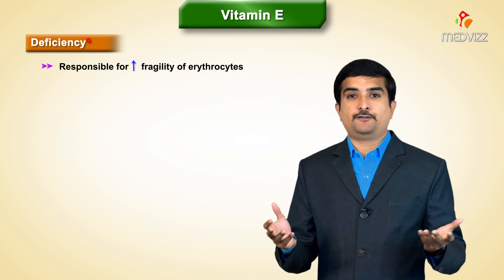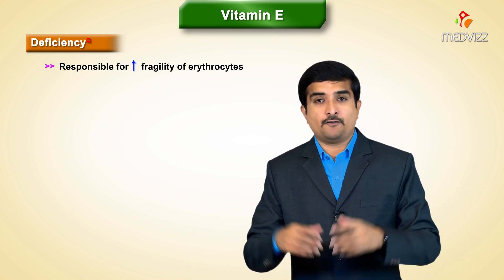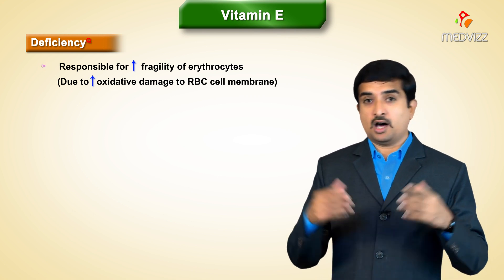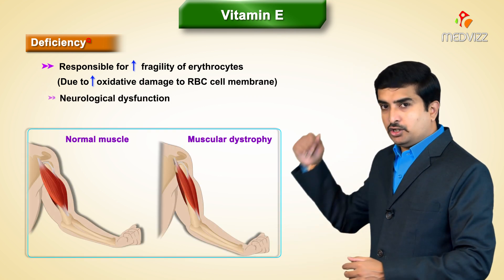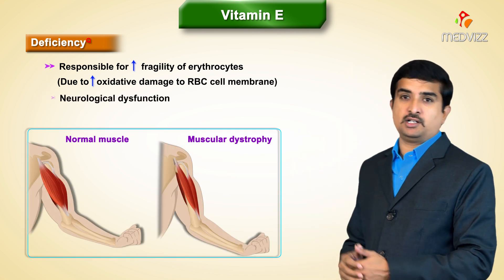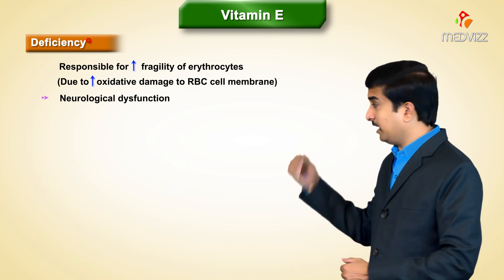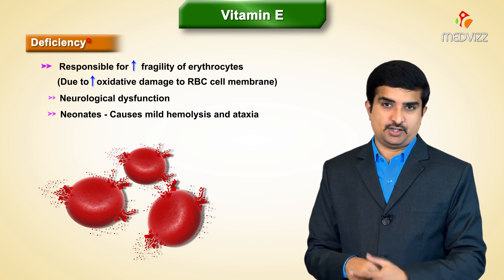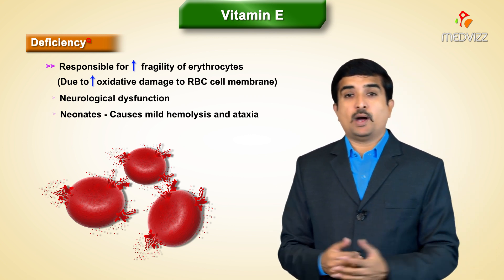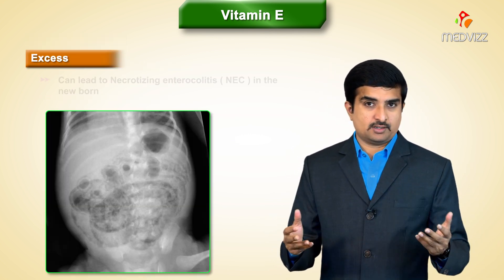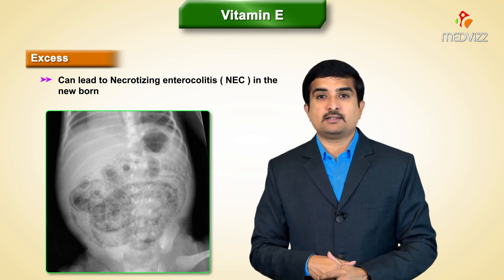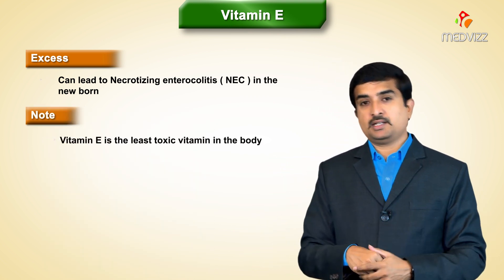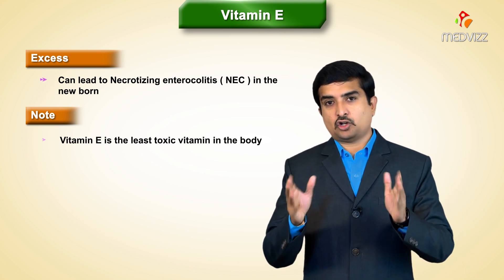Vitamin E is also used in treating nocturnal muscle cramps, intermittent claudication, and fibrocystic breast disease. Deficiency of Vitamin E is responsible for increased fragility of erythrocytes due to increased oxidative damage to the RBC cell membrane, neurological dysfunction, especially muscular dystrophy, and in neonates it causes mild hemolysis and ataxia. Excess Vitamin E can lead to necrotizing enterocolitis in the newborn.